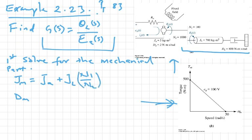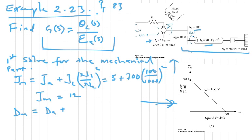This will give us J_a which is 5 plus J_L which is 700, and then we have N_1 which is 100 over N_2 which is 1000, whole thing squared. If you simplify this you will have J_M equals 12. Now we do the same for D_M, the equivalent viscous damper, and this will give you D_a plus D_L times N_1 over N_2 whole thing squared.